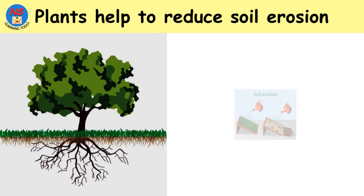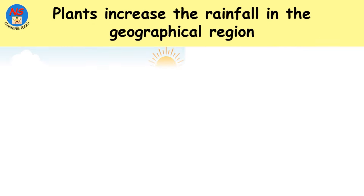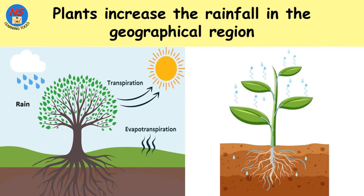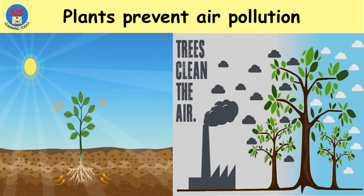Plants help to reduce soil erosion. Plants also help absorb some of the water in the soil, making it harder for water to wash the soil away. Plants increase the rainfall in the geographical region. Plants help bring rain through the process of transpiration — pulling water from the soil with the help of roots and letting it evaporate from the surfaces of the leaves and stem.